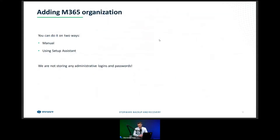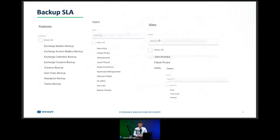There are two ways to add your tenant to our solution. The first is manual — you provide three pieces of information: tenant ID, client ID, and the secret, which is simply the application password. The second, which I'll show in the live demonstration, is using the Assistant wizard — there are several steps, and we guide you through adding your application.